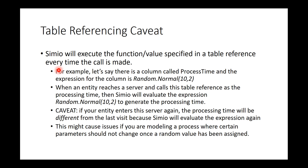This might cause issues if you're modeling a process where certain parameters should not change once a random value has been assigned. So if you have a certain process where you want to call the table value once and after that you want it to be unchanged, then using a table reference for processing time might not be the best idea, because you're going to get some erroneous results. So if you're confused, I'm going to show you an example in the next part of the video to demonstrate this point.